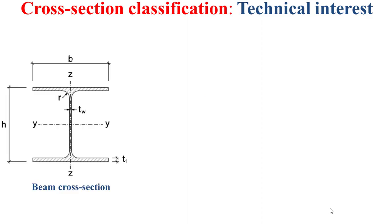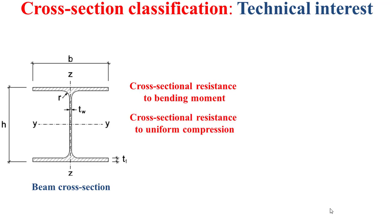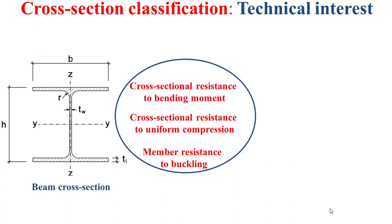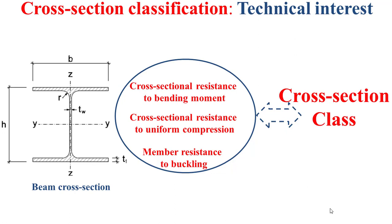First of all, it's to note that any beam cross-section presents several mechanical resistance properties. Among these, we can distinguish the cross-sectional resistance to bending moment, the cross-sectional resistance to uniform compression, and the member resistance to buckling. The evaluation or determination of these three mechanical resistance properties strongly depends on the class of the cross-section.